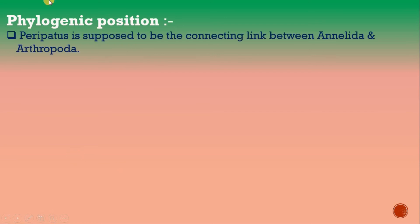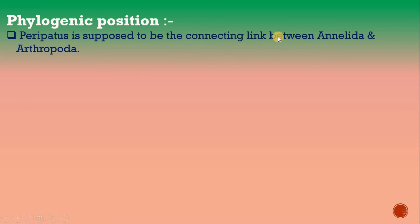Regarding its phylogenetic position, Peripatus is supposed to be the connecting link between Annelida and Arthropoda. It has characters of both Annelida and Arthropoda.